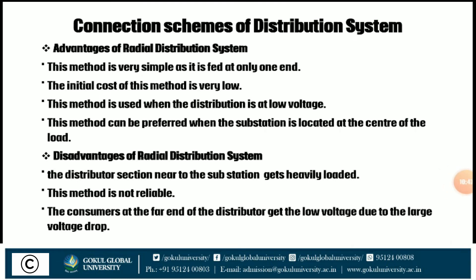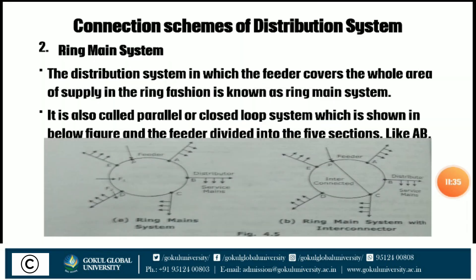Advantages of the radial distribution system: this method is very simple as it is fed at only one end; the initial cost is very low; it is used when distribution is at low voltage; and it can be preferred when the substation is located at the center of the load. Disadvantages: the distributor section near the substation gets heavily loaded; this method is not reliable; and consumers at the far end get low voltage due to large voltage drop.